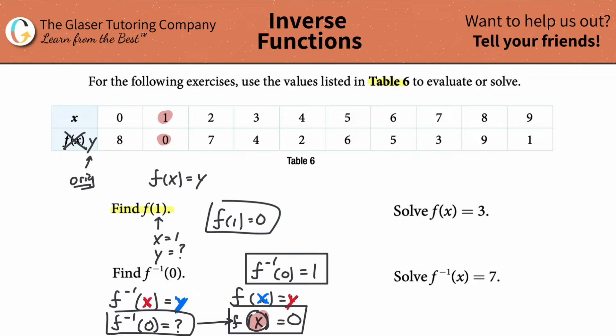Another way to view it is very simply like this. If you know that the coordinates here of the original function is going to be one comma zero, right? I'll write it over here.